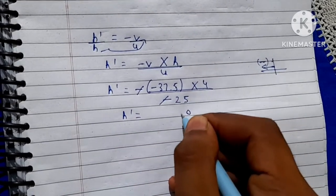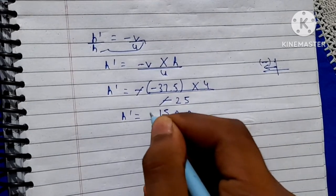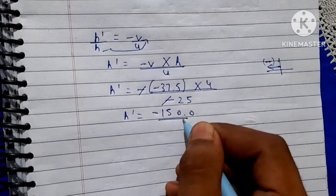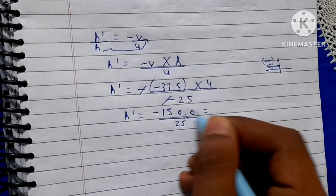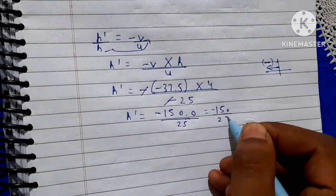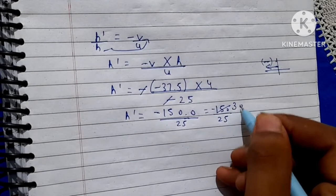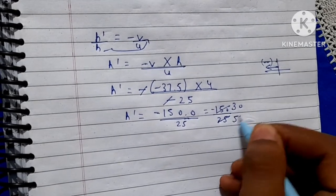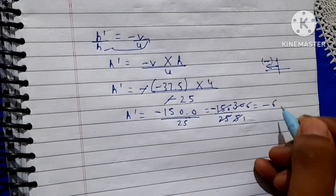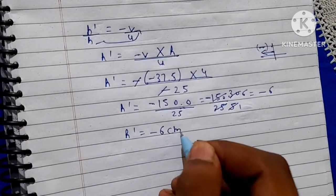Multiplying, 37.5 × 4 / 25 = 150/25 = 6. So h' = -6 cm.